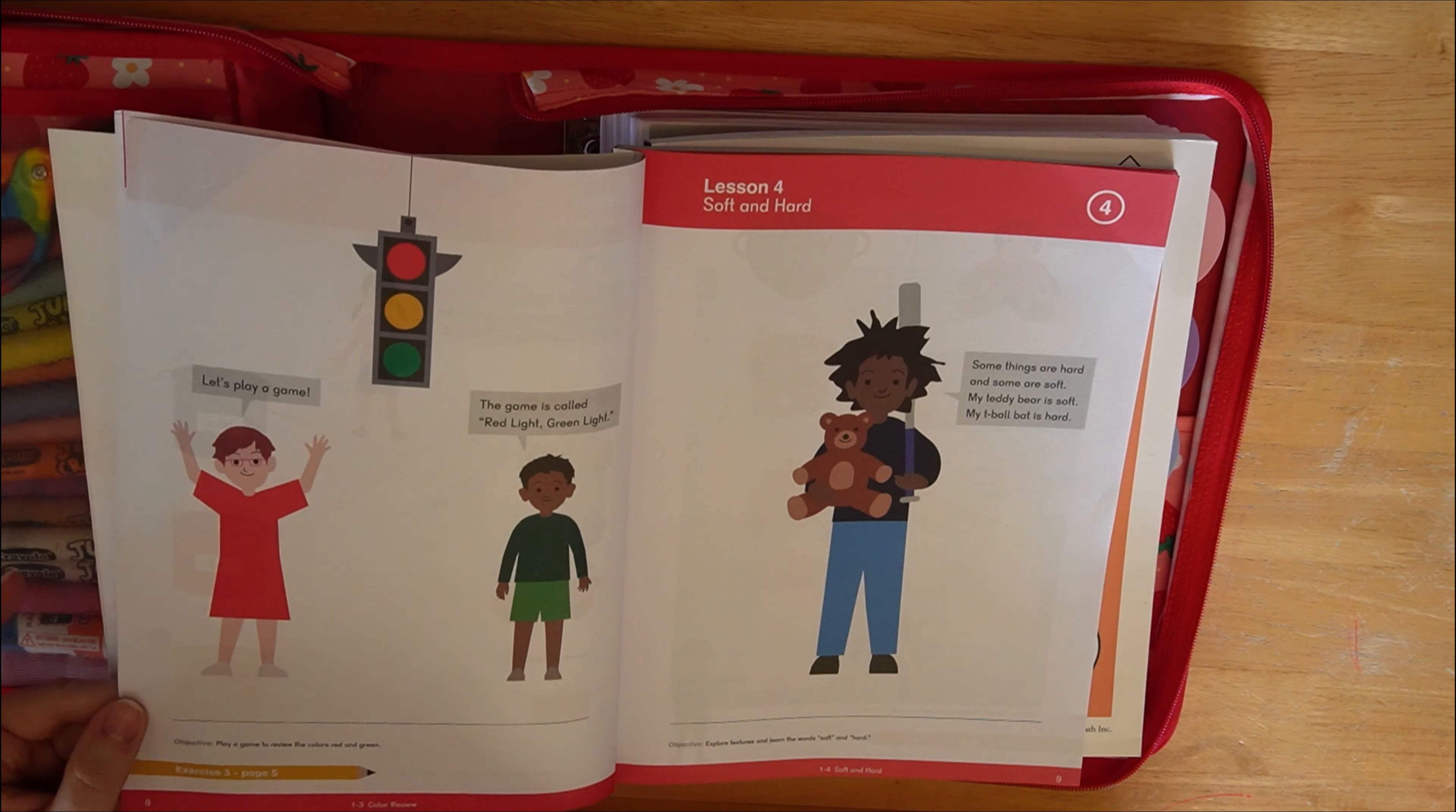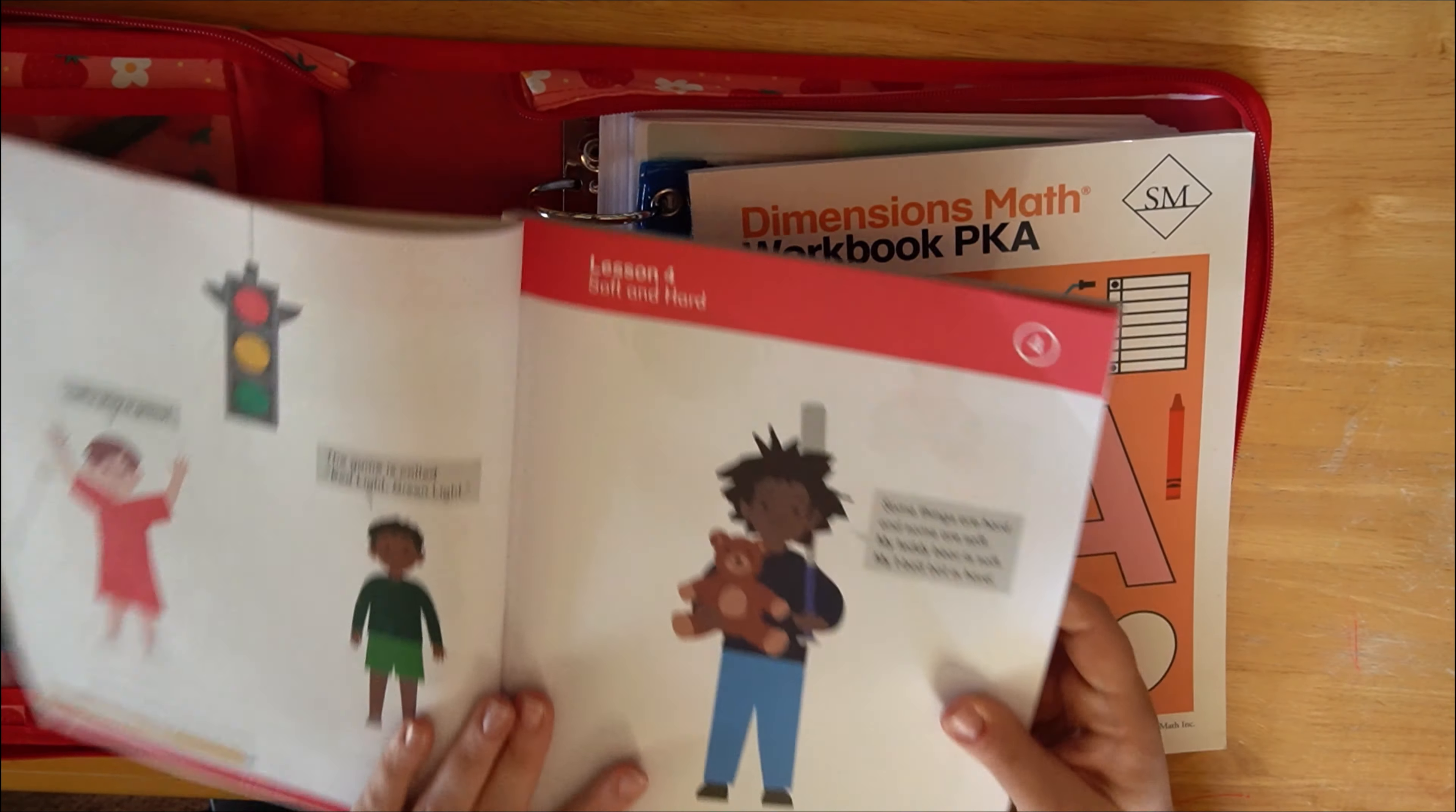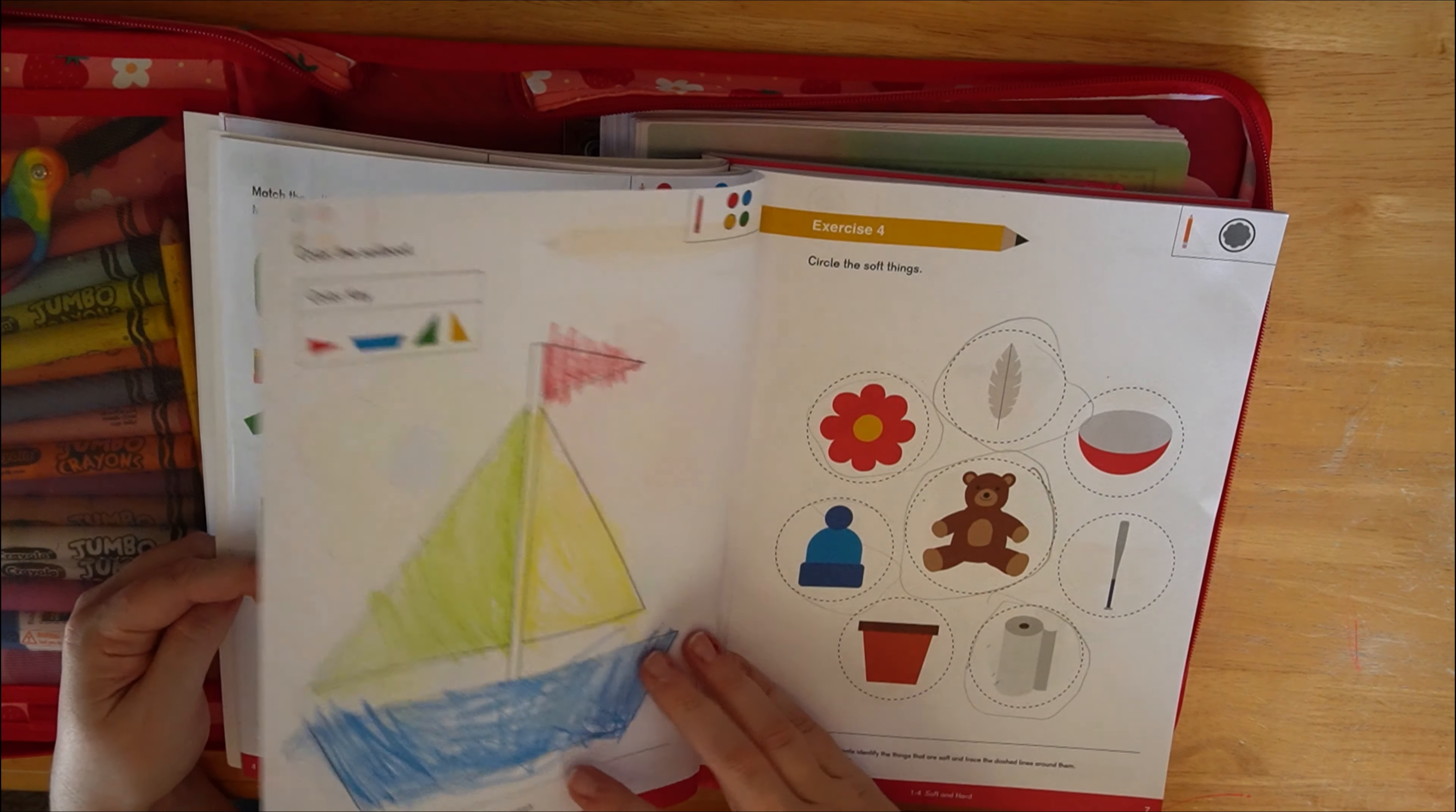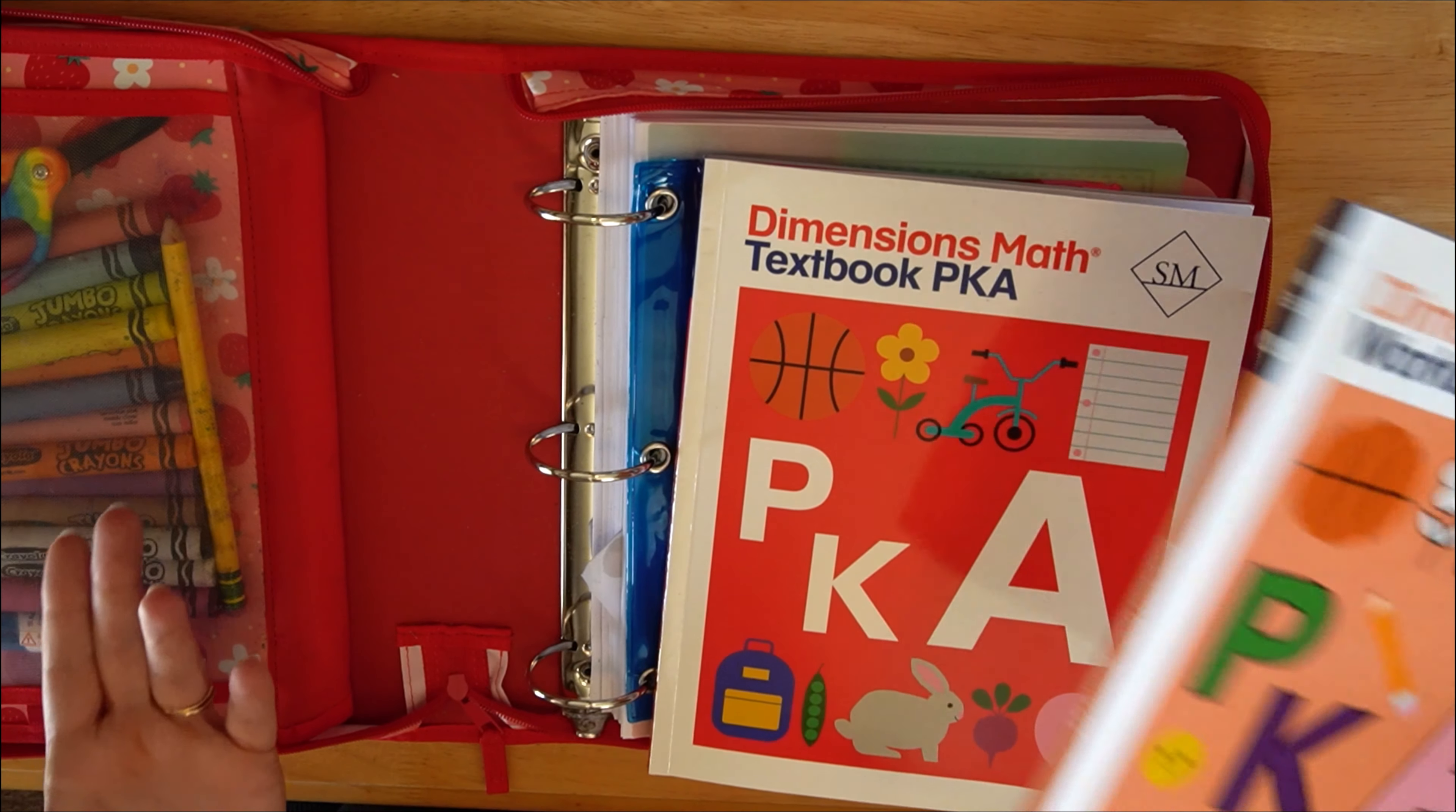That's the end of one lesson. And then what you do is you go over into your workbook. And this pencil down here says where to pick up in your workbook at. So page five, you turn to page five. There's your work that you need to do for the day. And again, you just go to the pencil. So it's really nice, really easy.